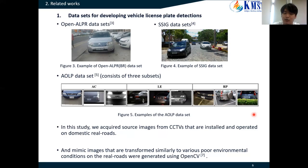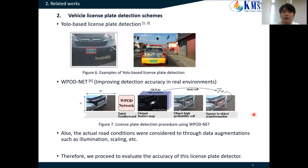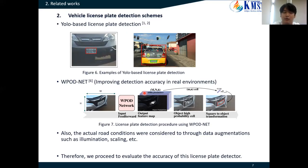So, in this study, we acquired source images from CCTVs installed and operated in domestic real-world environments. These images reflect various environmental conditions, and the real-world images were generated using open datasets. The next related work covers studies for vehicle license plate detection networks. In Studies 1 and 2, standard networks were used or slightly modified to detect license plates. As shown in Figure 6, no attempt was made to overcome environmental constraints. However, Study 6 proposed a method for improving detection accuracy in real environments, and they provided a trained model.